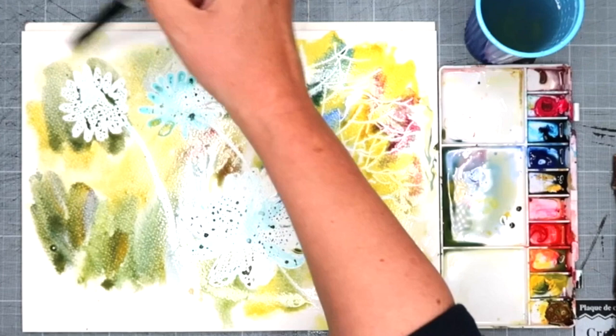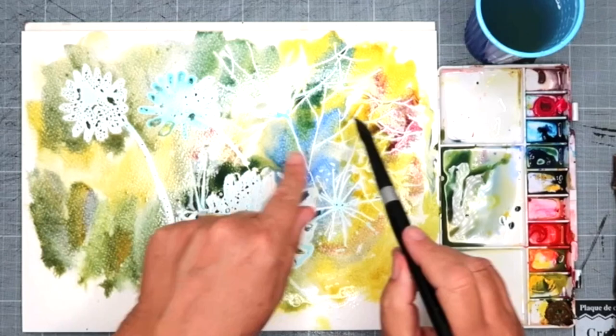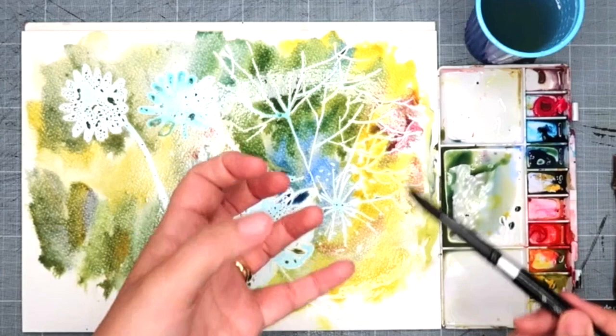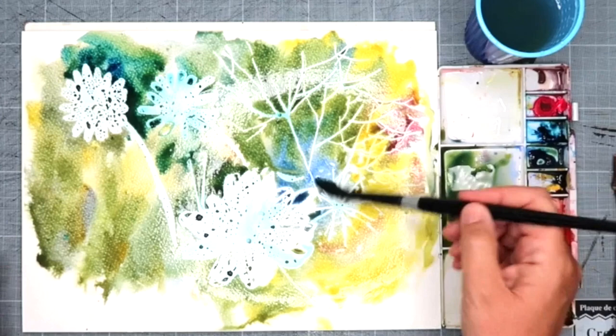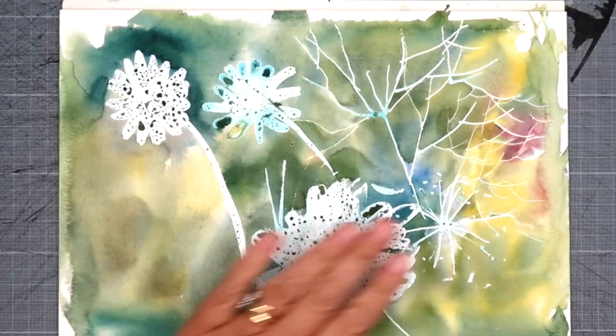The whole idea when you're using masking fluid is there's no point putting a really pale color around it because the whole idea is you want it to show up, so you need to have contrast. You don't want to put too wishy-washy a wash. Make sure it's nice and strong so your light will appear. That's important. It doesn't have to be too dark but strong enough. I'm going to let that dry.